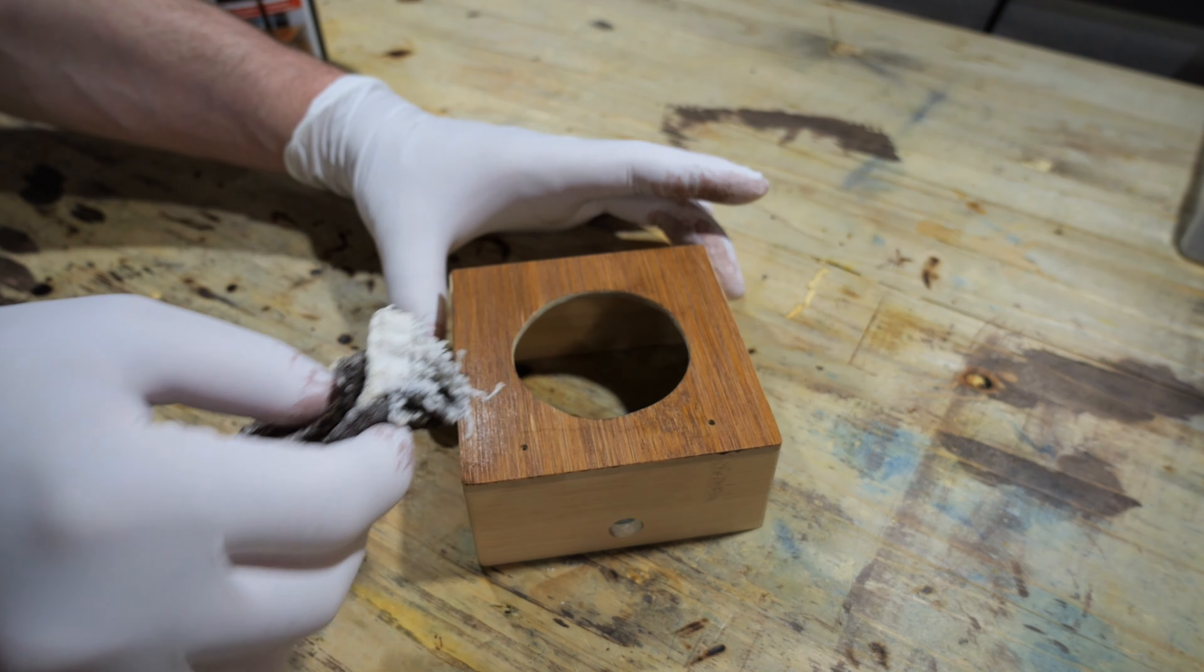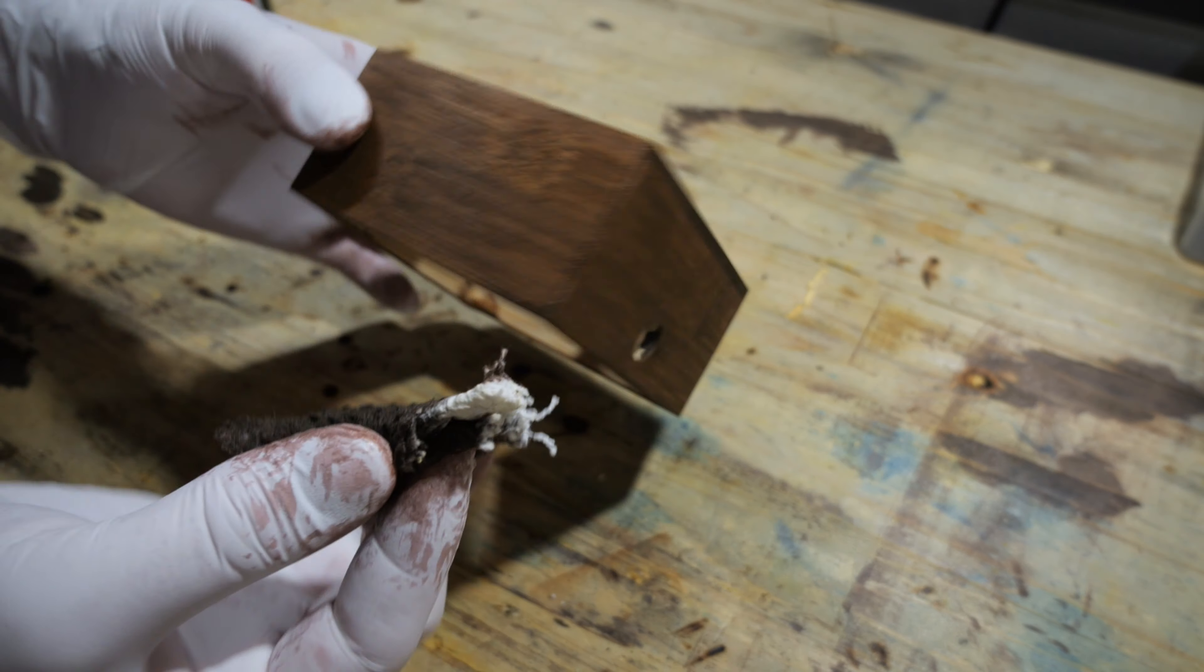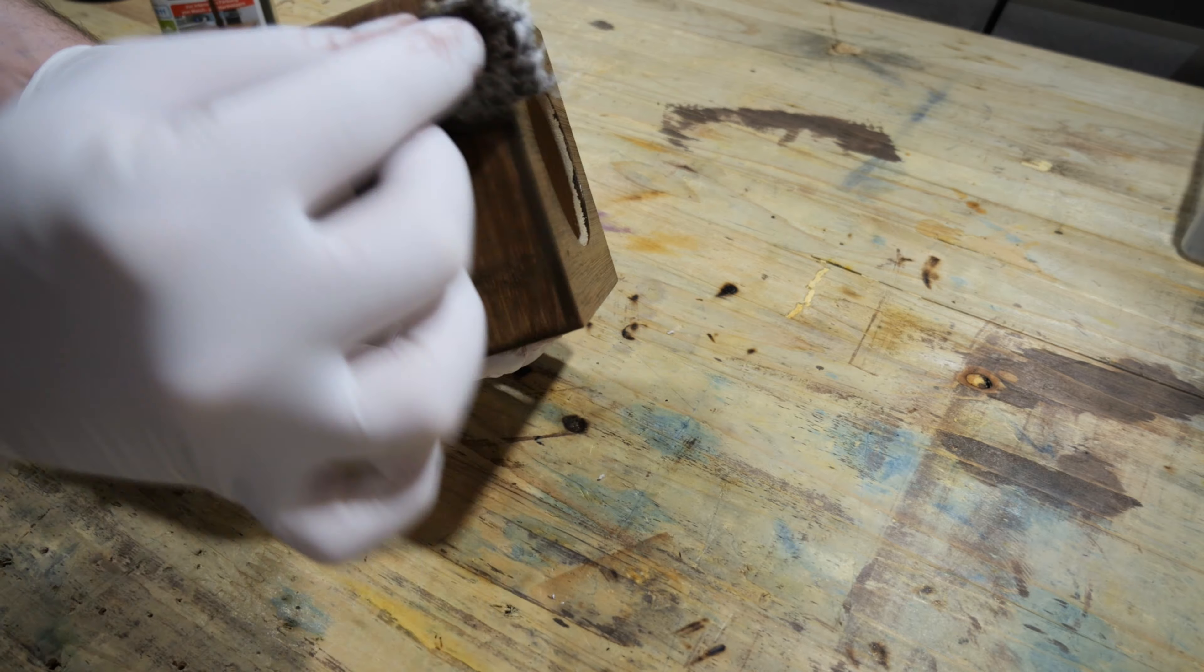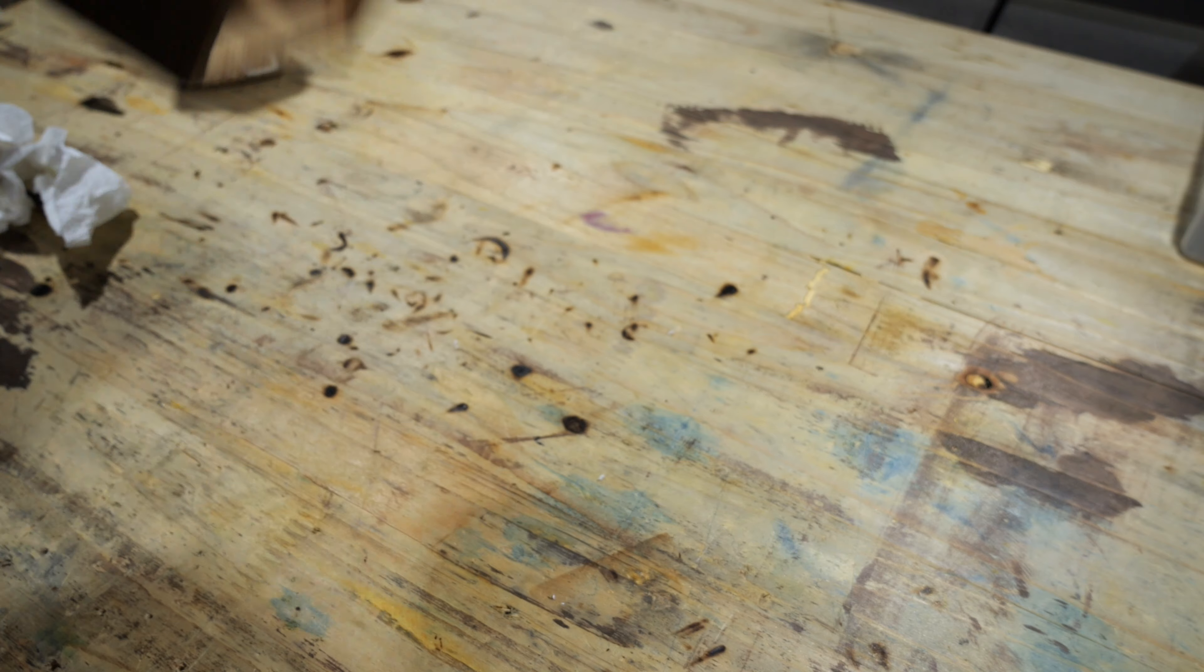Since the bamboo wood was a little too light for me, I used a wood stain to darken it. I like this darker color much better.